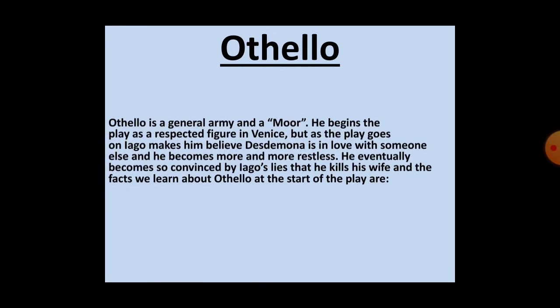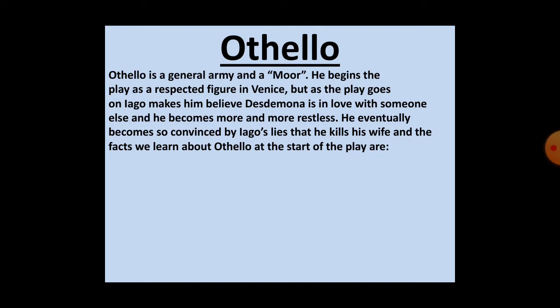Now I have moved towards the first topic: Othello and his character sketch. Basically, Othello is a general in the army, a Moor, and an African black-skinned person. He begins the play as a respected figure in Venice, but as the play goes on, Iago makes him believe that Desdemona is in love with someone else. He becomes more and more restless, and eventually becomes so convinced by Iago's lies that he kills his wife.